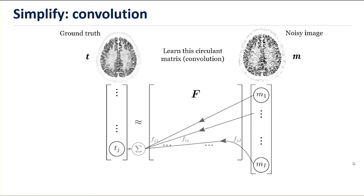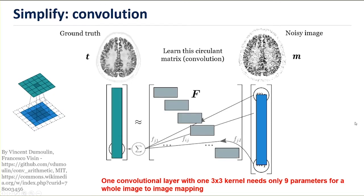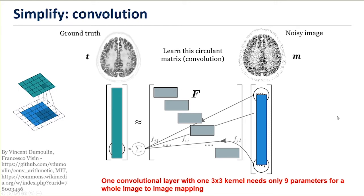For simplicity, I'm using a noisy image instead of a sinogram. A convolution kernel — for example, a 3x3 kernel — only needs nine parameters to do a whole image-to-image mapping, duplicating values in matrix F with just nine parameters. The convolution kernel just exists along rows that it duplicates and shifts in this matrix F, doing neighbourhood averaging with particular weights to deliver an output. That gives us a whole image-to-image mapping with only nine trainable parameters.